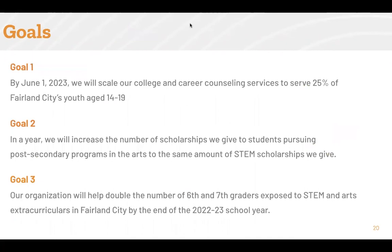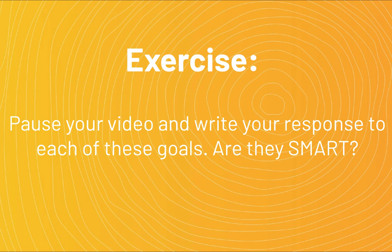Which of these examples are SMART? What are the components that make them SMART? Which of these examples are not SMART, and what could be added or adjusted to make them SMART? Ask yourself: what are they trying to accomplish and for whom? Do they indicate how much and how many? Does it include a specific time frame? Does it seem feasible? We recommend writing your response to each of these goals. Please take a moment to pause here and consider your responses — hit pause on the recording and consider your responses.